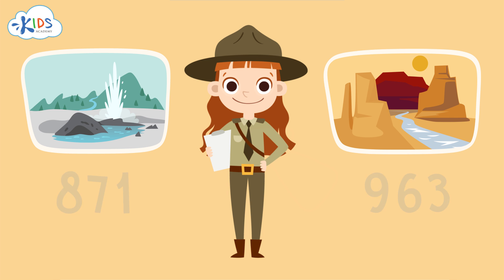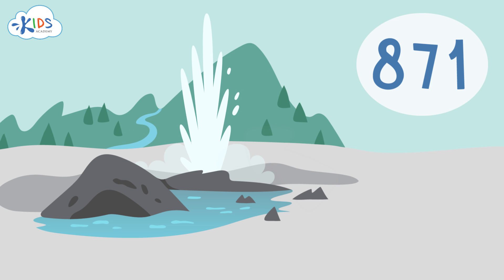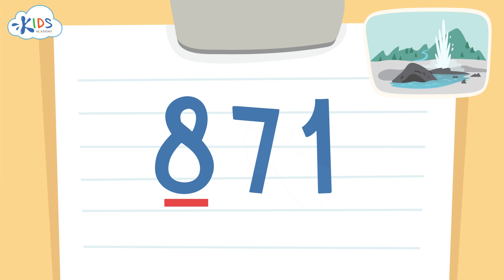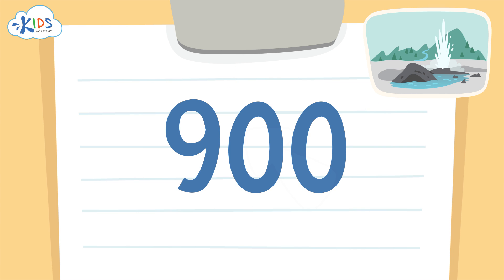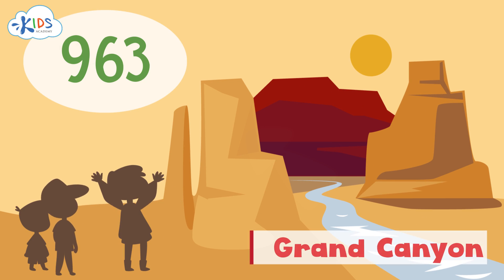Okay, here's the answer. Old Faithful saw 871 visitors, so we'll use the strategy of underlining the hundreds place and drawing an arrow to the tens place. I see a seven in the tens place — if it's five or higher we have to round up. The eight in the hundreds place is underlined, so we round up the 800 to 900. When rounding to the hundreds place, the numbers in the tens and ones places become zeros.